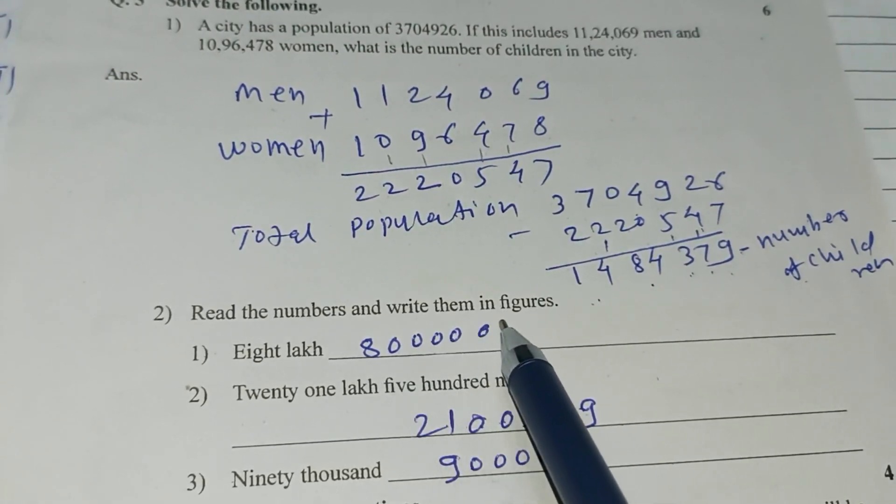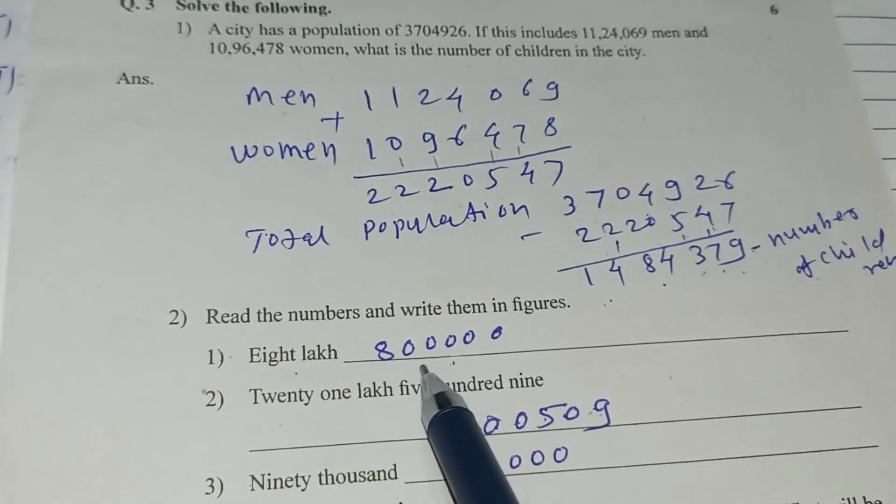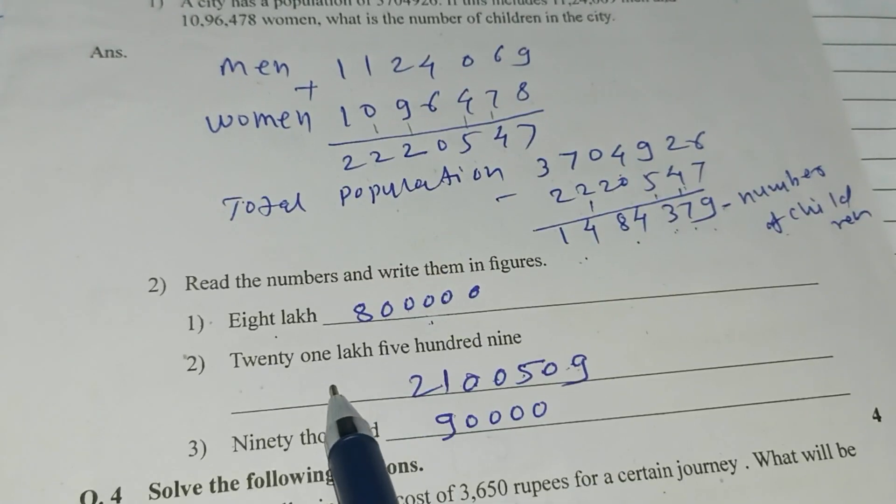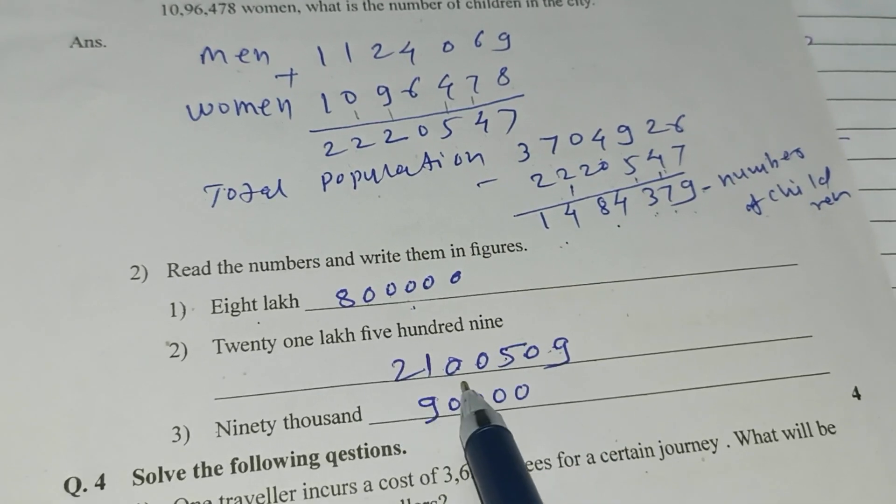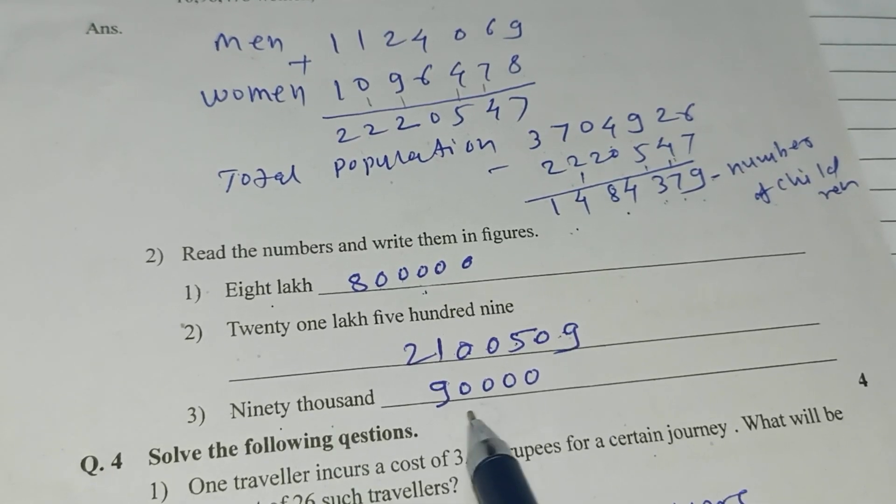Read the number and write them in figures. 8 lakh, this is 8 lakh. 8, 1, 2, 3, 4, 5, 0. 21,509. 90,000, this is 90,000.